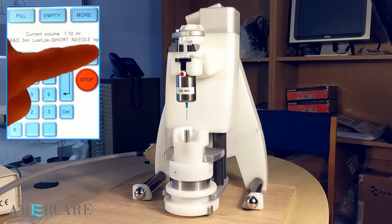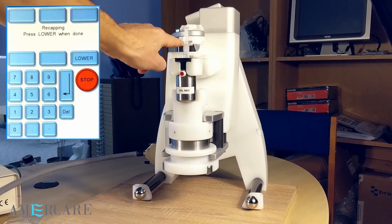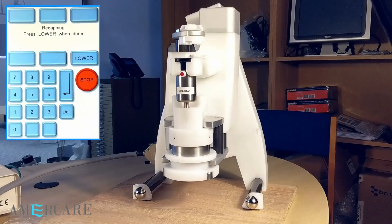Press recap. The carriage lifts automatically aligning the needle and the sheath. Simply apply light pressure to engage the sheath. Press lower to lower the carriage.